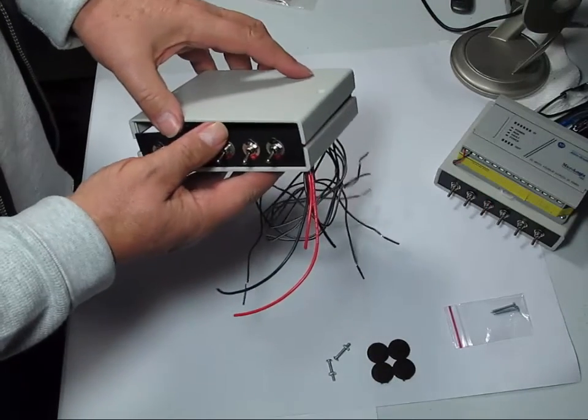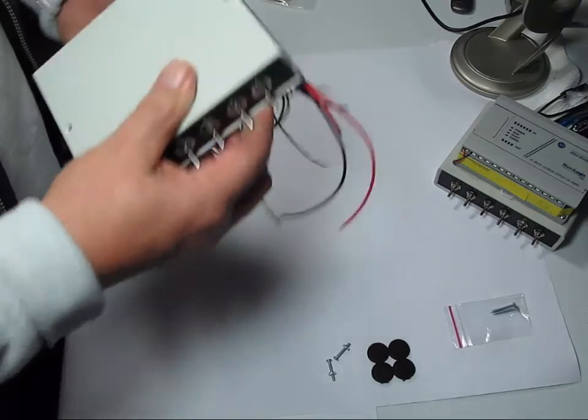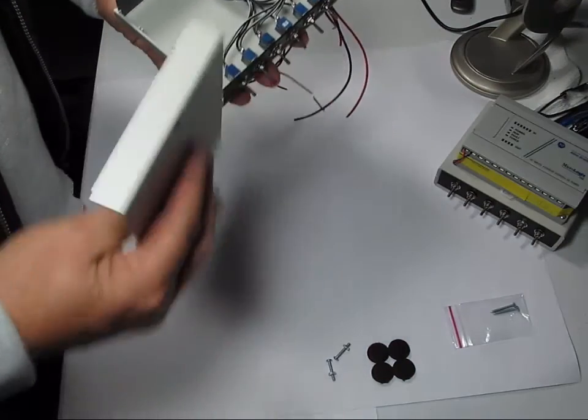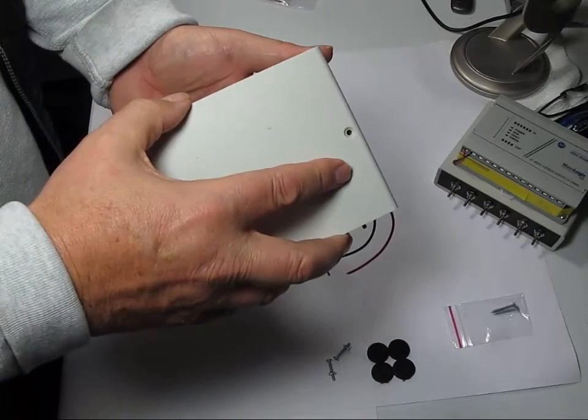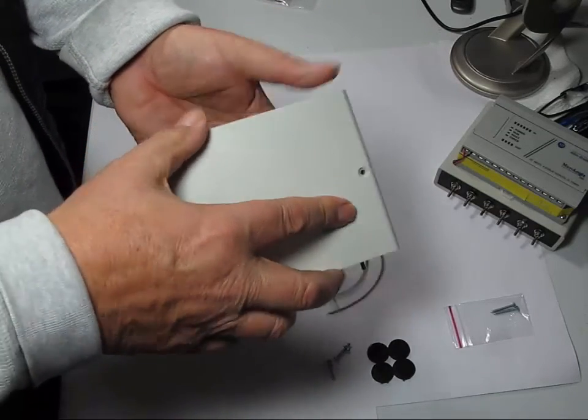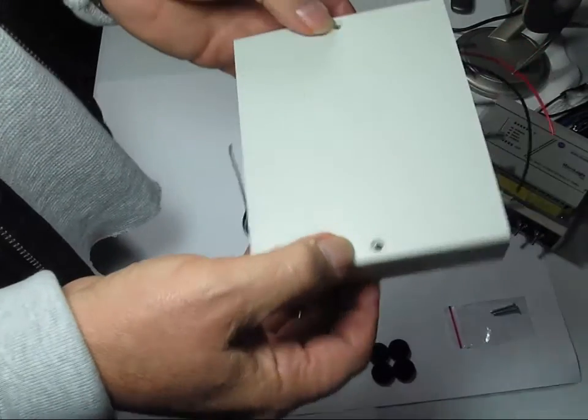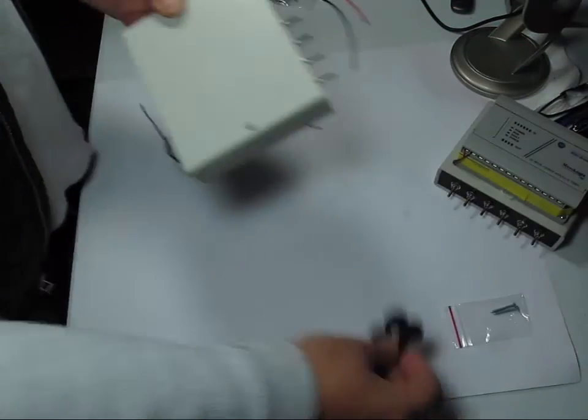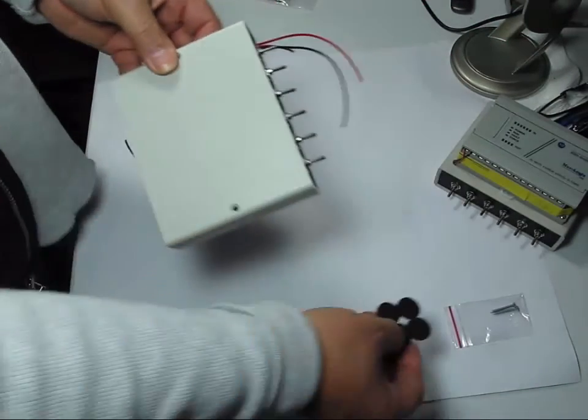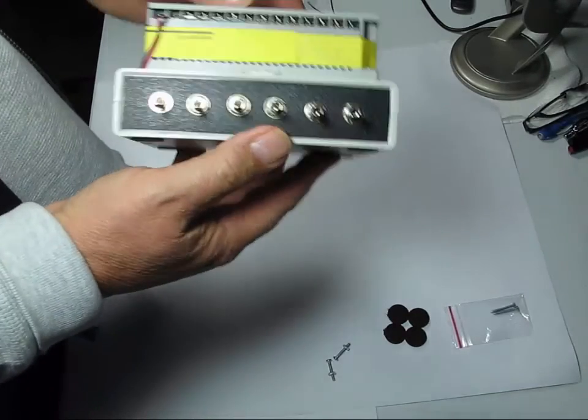There you have it. This is just a little addendum if you happen to buy one of these kits. By the way, the two halves only go together one way. They're tongue and groove. There you go. You run two screws in. Put your four pads, one on each corner.